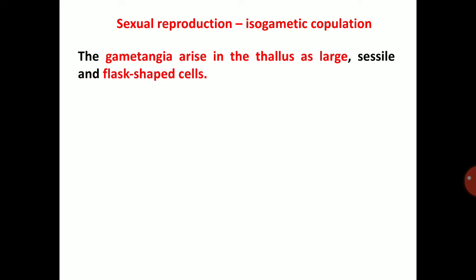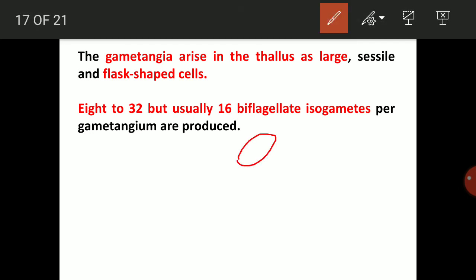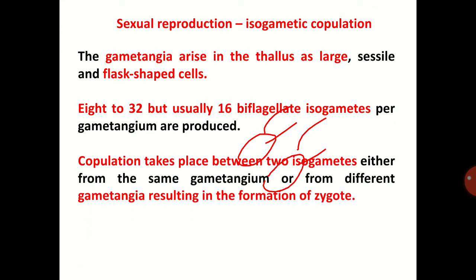Sexual reproduction occurs through isogametic copulation. The gametangia arise in the thallus as large sessile flask-shaped cells. Each gametangium produces 8 to 32, but usually 16, biflagellate isogametes per gametangium. Isogametes means identical gametes. Copulation takes place between two isogametes either from the same gametangium or from different gametangia, resulting in the formation of a zygote.